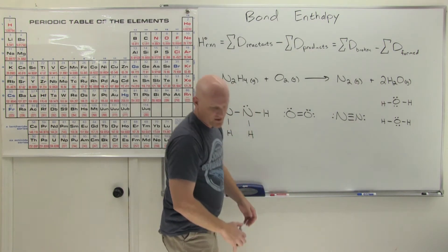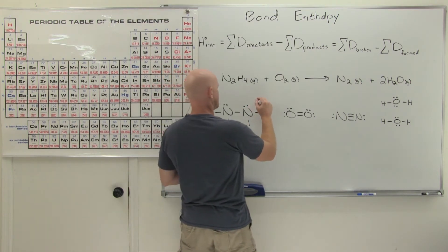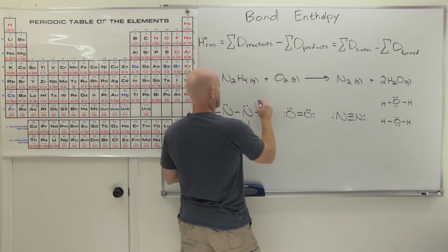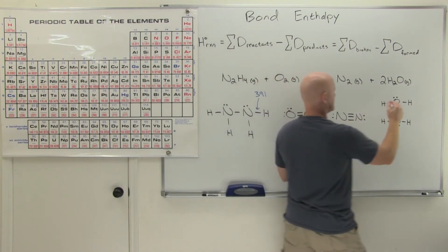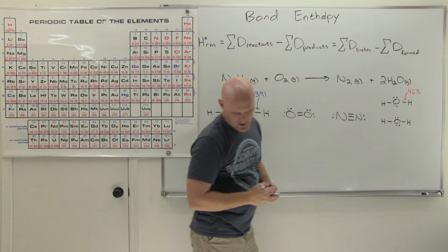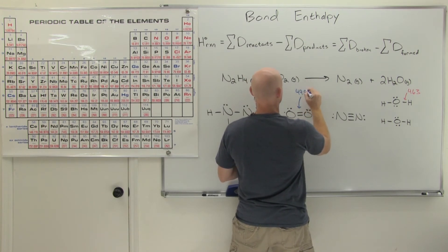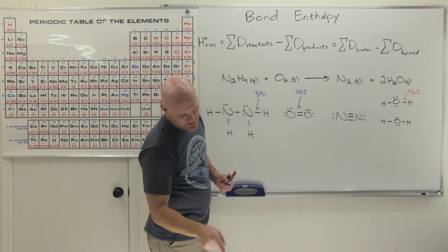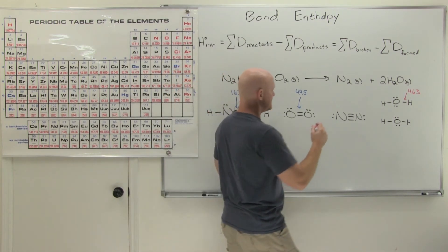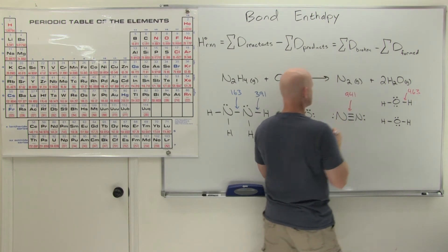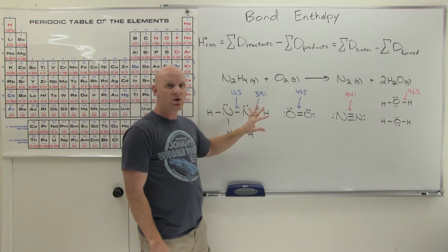Looking at the table on the handout, we can see how much energy it costs to break each bond. The N–H bond is 391, the O–H bond is 463, the O=O double bond is 495, the N–N single bond is 163, and the N≡N triple bond is 941. These are color-coded in blue because they're on the reactant side — the bonds we're going to be breaking — and bond breaking is endothermic, which is why they're highlighted in blue.